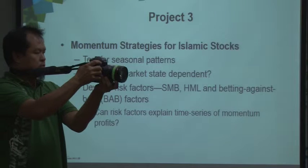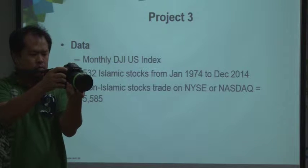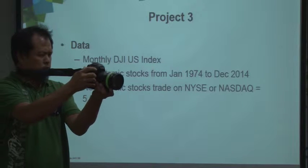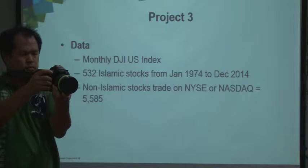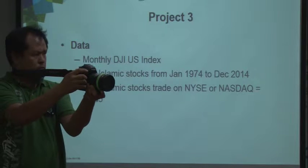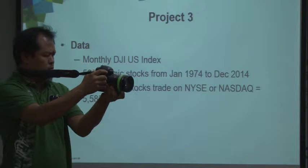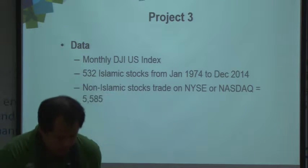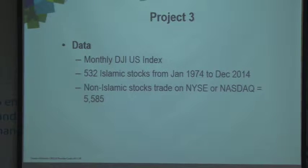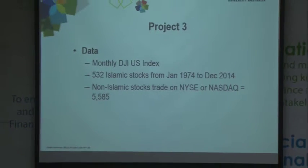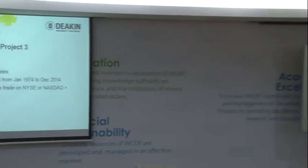We compute that for later use in the paper. This dataset is monthly data and has 532 Islamic stocks from January 1974 — a much longer sample than the Asia-Pacific dataset, which we discussed was from 1980. When you look at the US-based stocks, you have a longer time series of data. The non-Islamic stocks we take has 5,585 stocks, so we reform portfolios based on these stocks — a much larger dataset in a completely different sort of market.